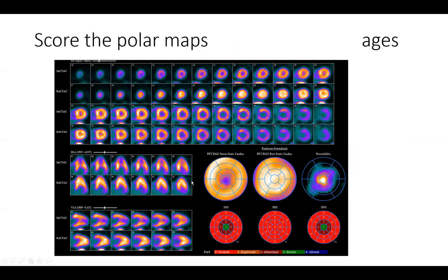We go to score these segments. Because of the improvement in the basal segments from rest to stress, we end up zeroing all the rest images and calling them normal. However, you can see on the reversibility map a significant perfusion defect in the apex and periapical segments, resulting in a sum difference score of 11 — meaning moderate ischemia or the extent of ischemia in the left ventricle.